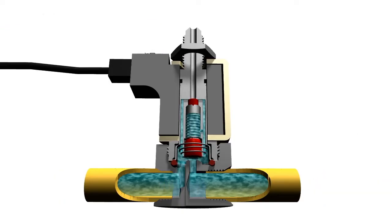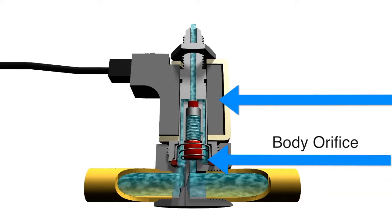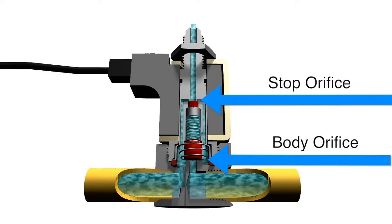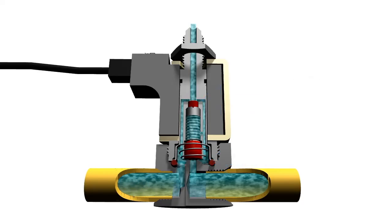It has two orifices, the body orifice and the stop orifice, one of which is always open. This allows for two paths of flow.